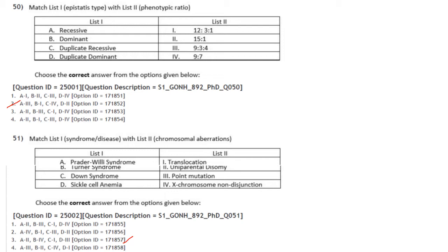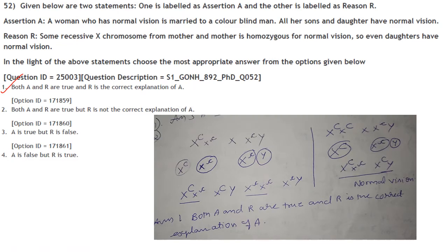Match syndrome/disease with chromosomal aberration: Prader-Willi syndrome — uniparental disomy; Turner syndrome — X chromosome non-disjunction; Down syndrome — translocation; Sickle cell anemia — point mutation.